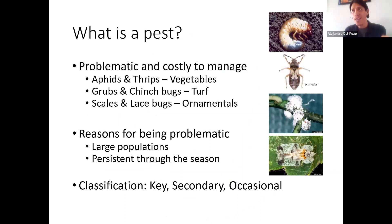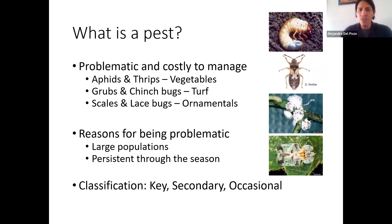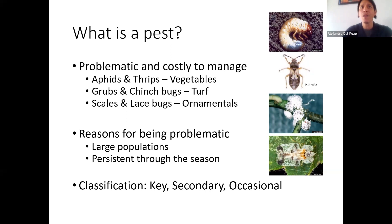So what's a pest? We're going to ID pests and learn about the most common pests in vegetables. A pest, simply put, is something problematic — something that costs money to manage. In vegetables: aphids and thrips. In turf and ornamentals: grubs, chinch bugs, scales, lace bugs. Why are they problematic? Because there are large populations, huge densities, outbreaks of insects or arthropods in my plots. And they're persistent through time, so I need to learn about them and manage them for multiple seasons.